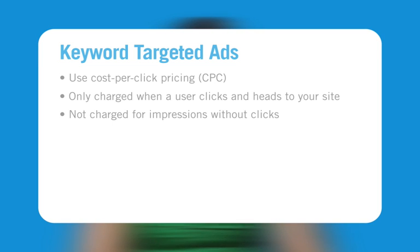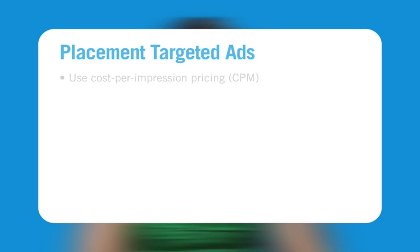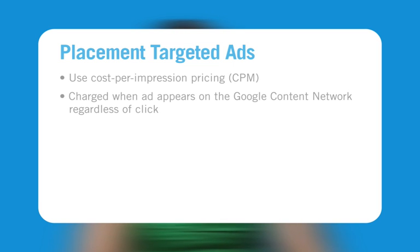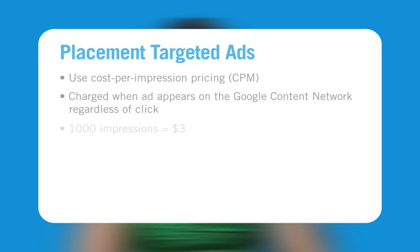AdWords campaigns that target websites in our content network rather than keywords are referred to as placement targeted campaigns, and are charged on a cost per impression basis. M is the Roman numeral for a thousand, so cost per thousand impressions is abbreviated to CPM. An impression is recorded each time your ad appears on the Google content network. Under the CPM model you are charged for each impression your ad receives regardless of whether users click your ad or not. For example, a CPM of three dollars means you pay three dollars every one thousand times your ad is displayed.